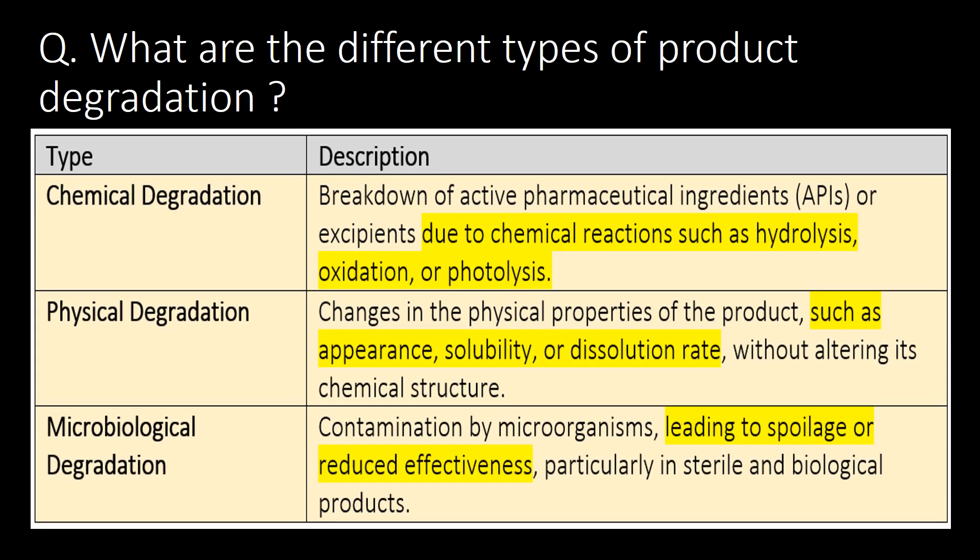What are the different types of product degradation? Broadly, product degradation in the pharma industry can be divided into three categories. First, chemical degradation — this is due to chemical reactions such as hydrolysis, oxidation, or photolysis.